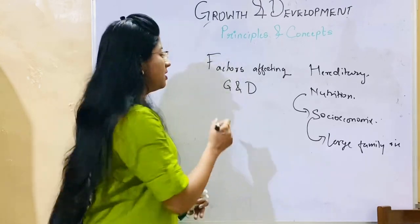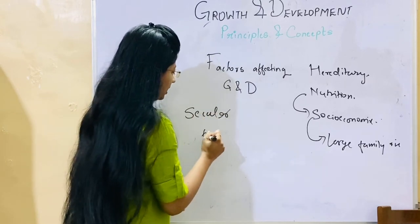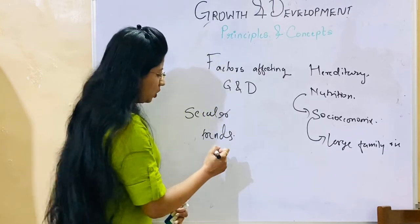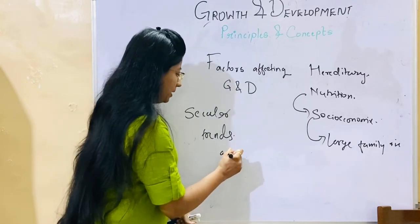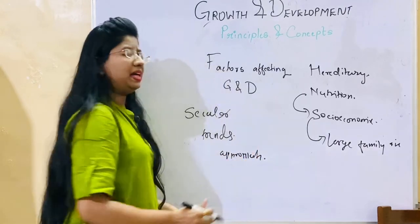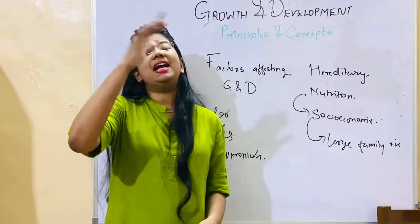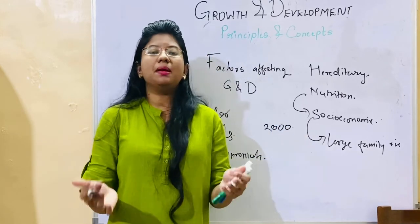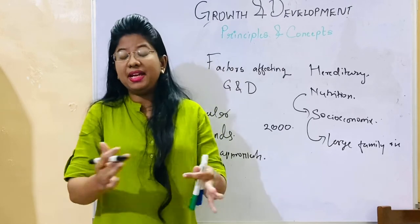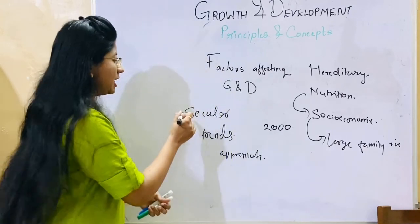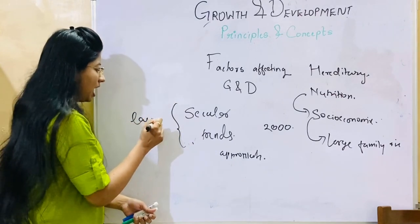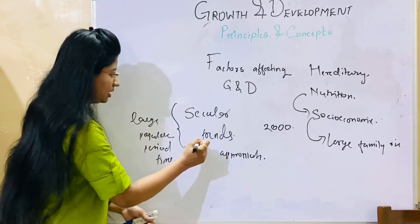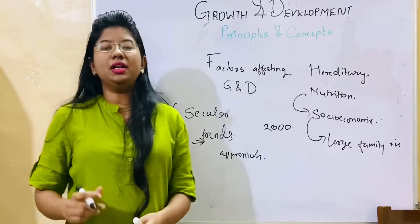One of the factors is a term called secular trends. Secular trends means, for example, comparing growth of children in 1950 to 1960 versus the year 2000 — in the more recent decade, growth is better because resources and facilities are good. Secular trends means we are comparing a large population over a period of time. That is why we use the term trends — it is a population trend.